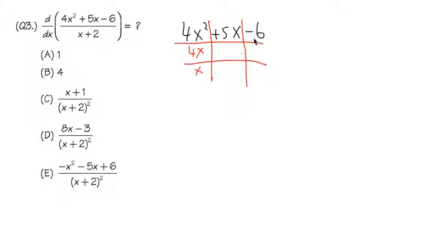And then right here you have to think about what times what will be -6. You can think about 6 times -1, 3 times -2, things like that. The correct combination will be -3 times 2, and you will put -3 here and positive 2 right here.